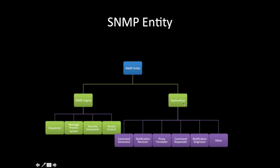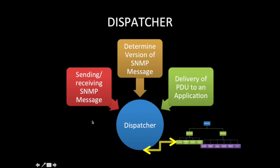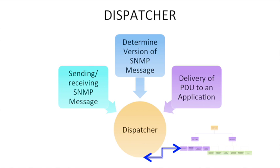On the application side, it includes the command generator, notification receiver, proxy forwarder, command responder, notification originator, and others. The application will make requests to the engine and the engine will respond. The dispatcher's task is to send and receive SNMP messages, determine the version of the SNMP message, and deliver the PDU to an application.